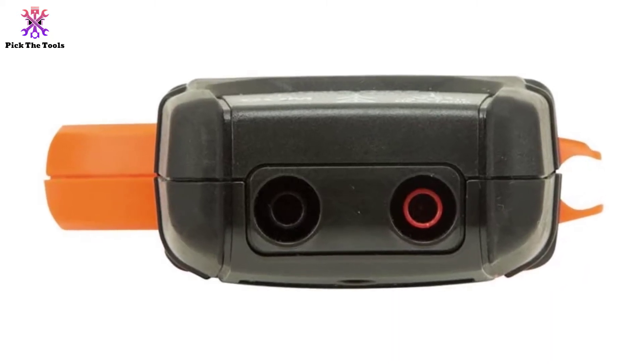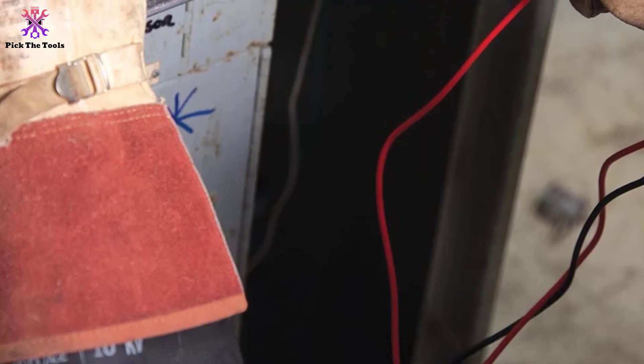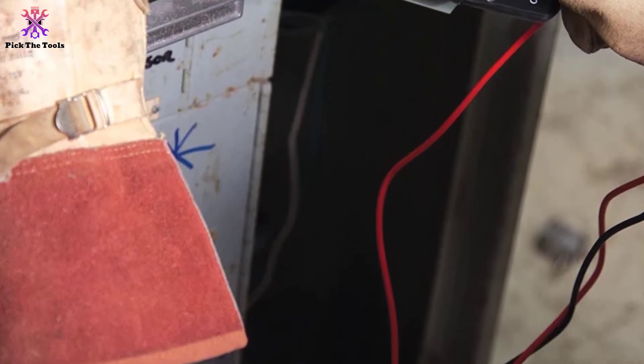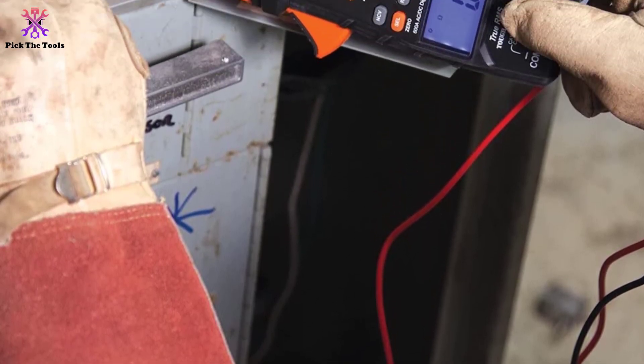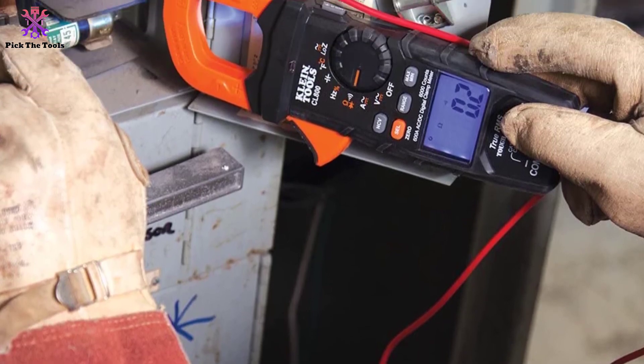Thanks to the double insulation quality, that means CL800 is certified by CAT IV 600V, CAT III 1000V Class II, double insulation safety rating.